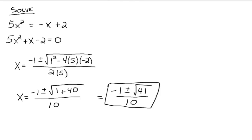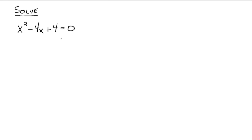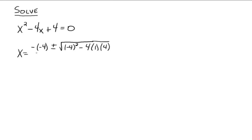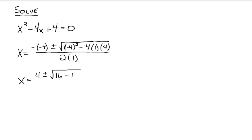Let's look at the next one. We have a quadratic equation and everything is on the left side, so we jump straight to the formula. A is 1, b is negative 4, and c is positive 4. So x equals negative b — that's negative of negative 4 — plus or minus the square root of negative 4 squared (note the parentheses) minus 4 times a times c, all divided by 2 times a. Simplifying: x equals 4 plus or minus the square root of 16 minus 16, all divided by 2.